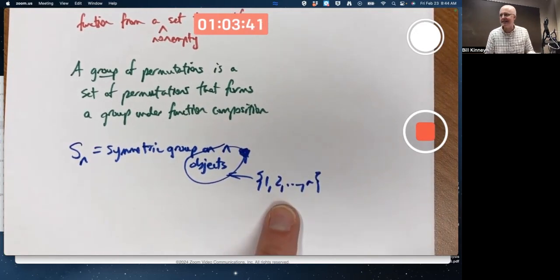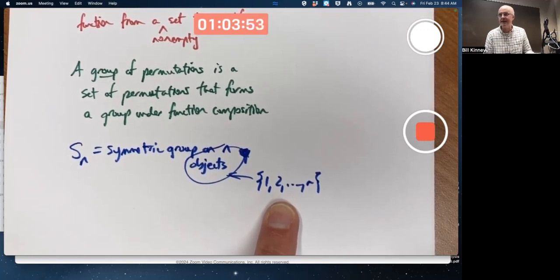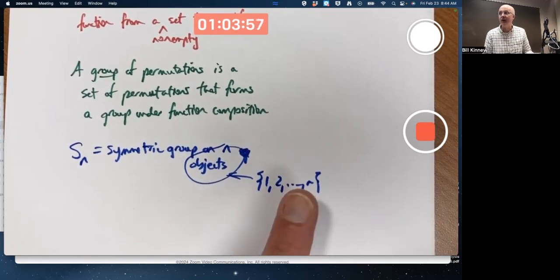Note, this is not Z_N, this is not U of N. The set 1 through N is not a group. What's the group? The group S_N, the symmetric group on N objects, is the group of all permutations on this set - 1 to 1 and onto functions from the set to itself.